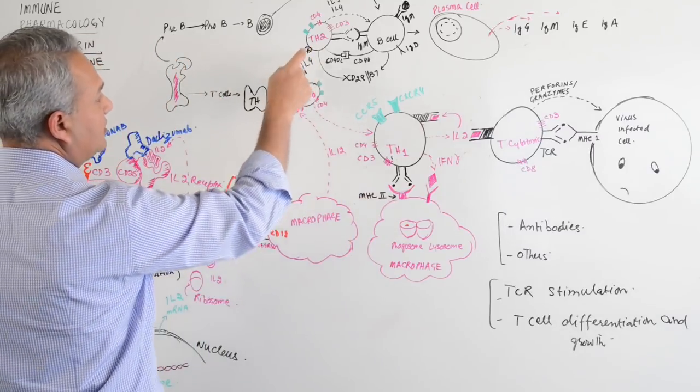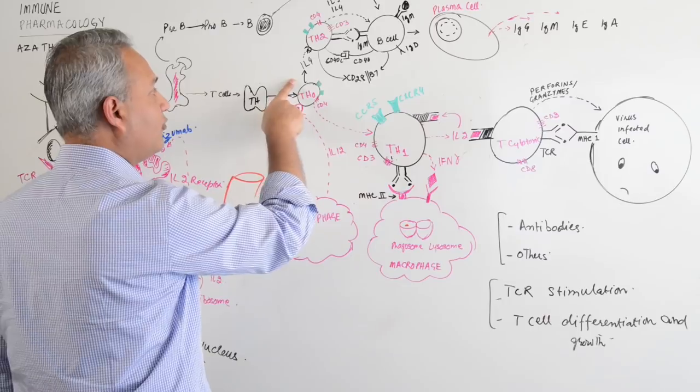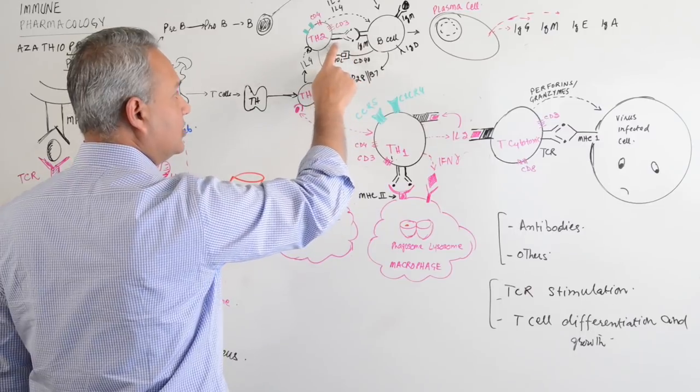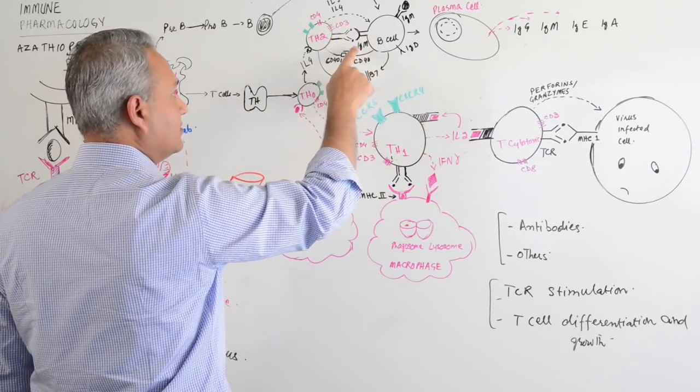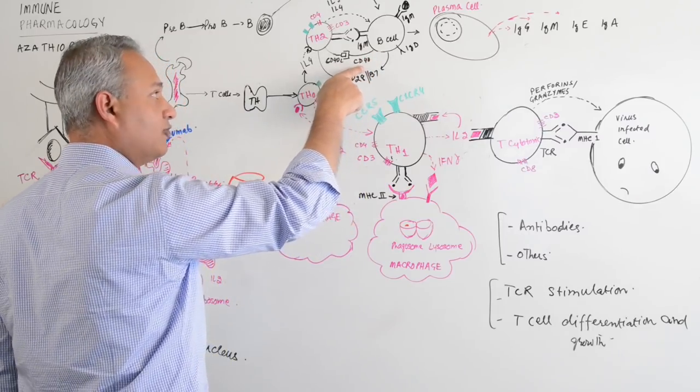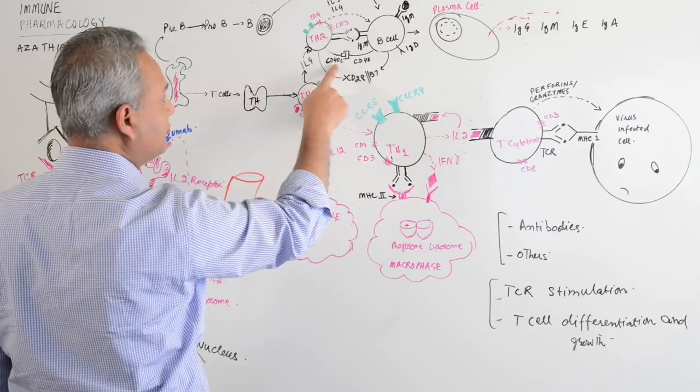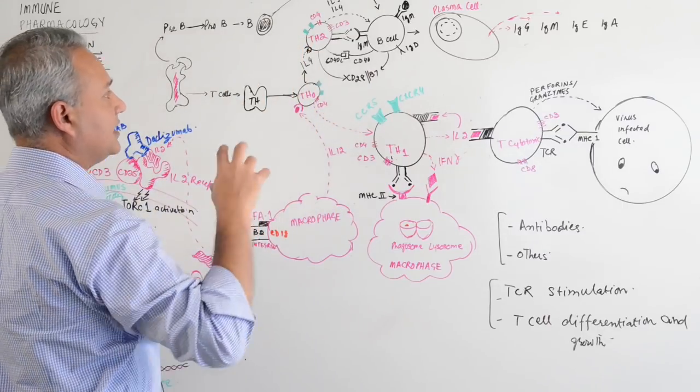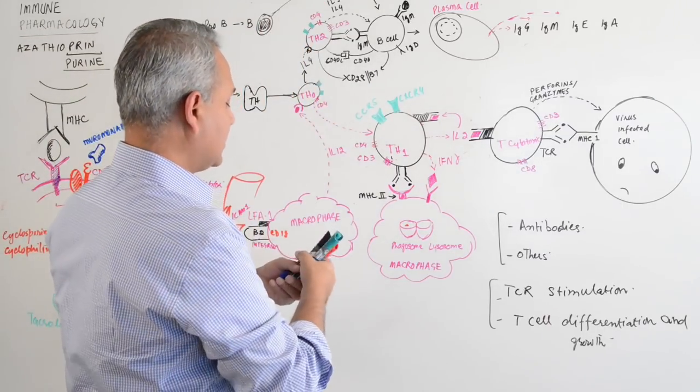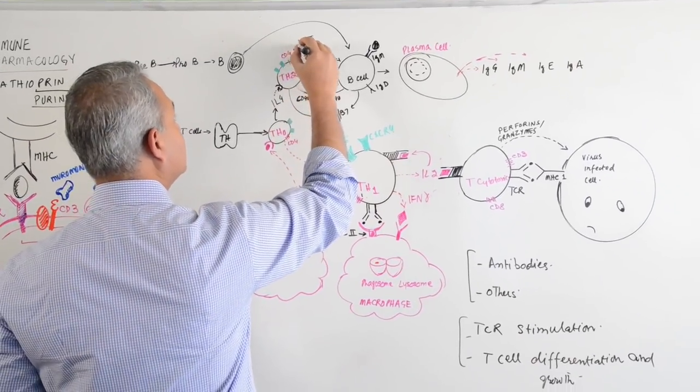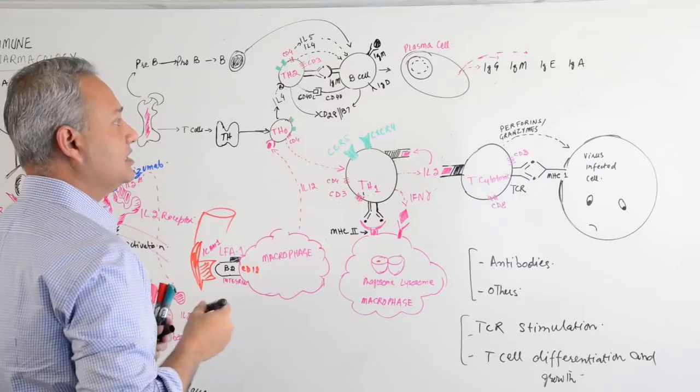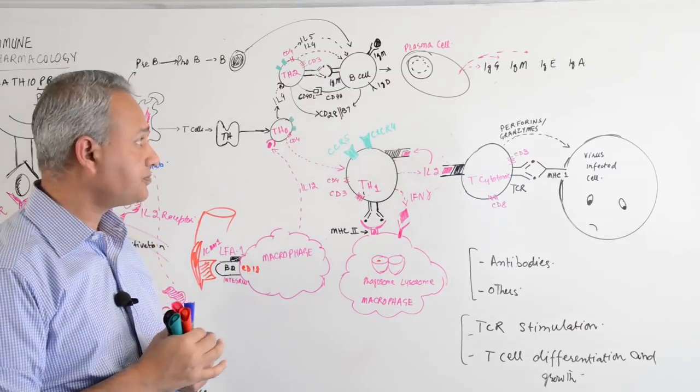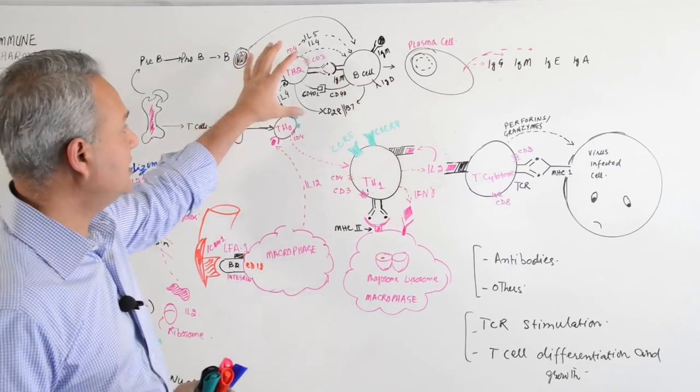If the T helper 0 cell naive cell is stimulated with IL-4, it becomes T helper 2. T helper 2 cell interacts with the B cell. Number 1, B cell presents the antigen to the T helper cell. Secondly, there is a co-stimulatory signal CD40 and CD40 ligand. Then there is B7 and CD28 interaction. Then there is the chemical stimulation and that is interleukin 4 and interleukin 5 which help the B cell do the class switching, interleukin 4 for the IgE and interleukin 5 for IgG and IgA.